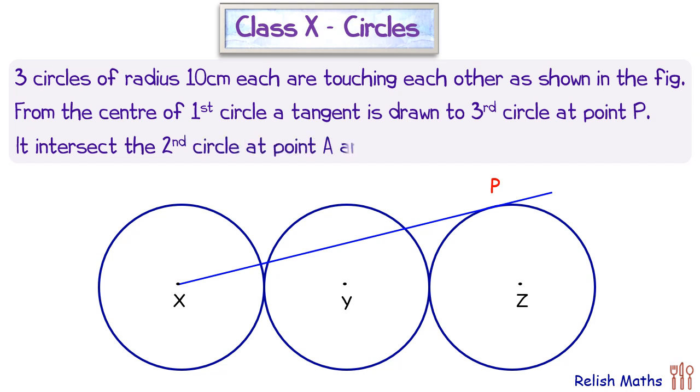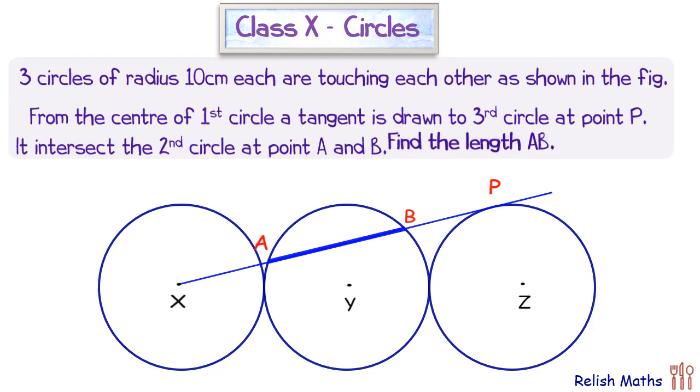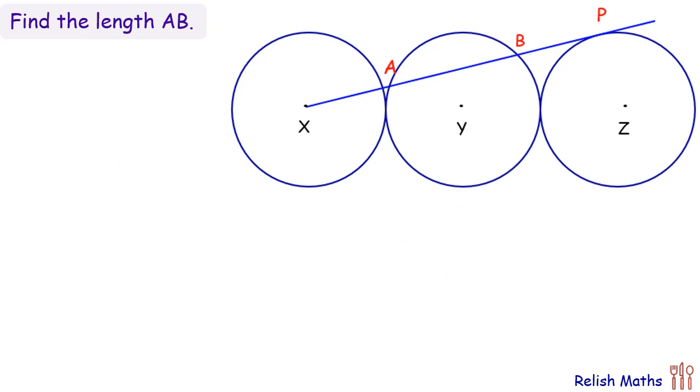It's intersecting the middle circle at points A and B. The question is you have to find the length of line segment AB, which is a chord in the second circle. Let's discuss the solution.